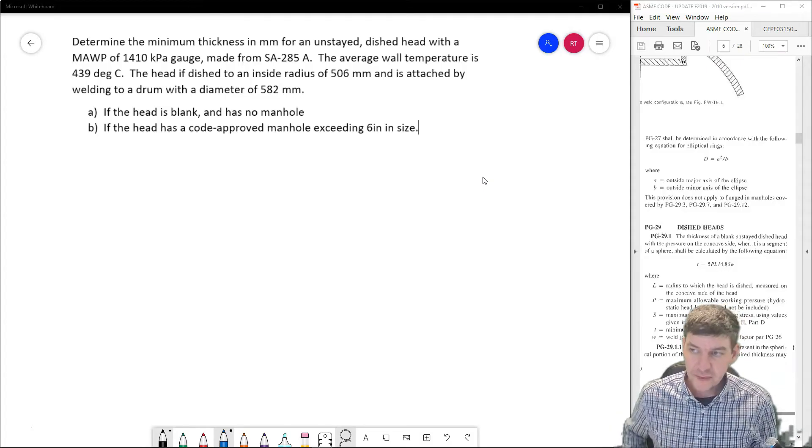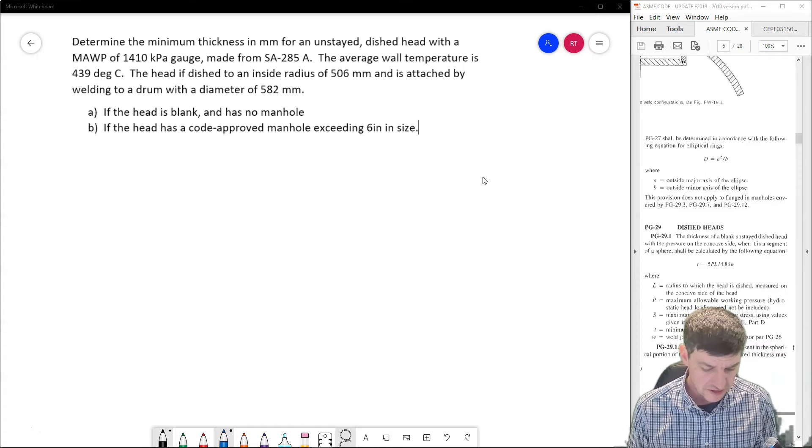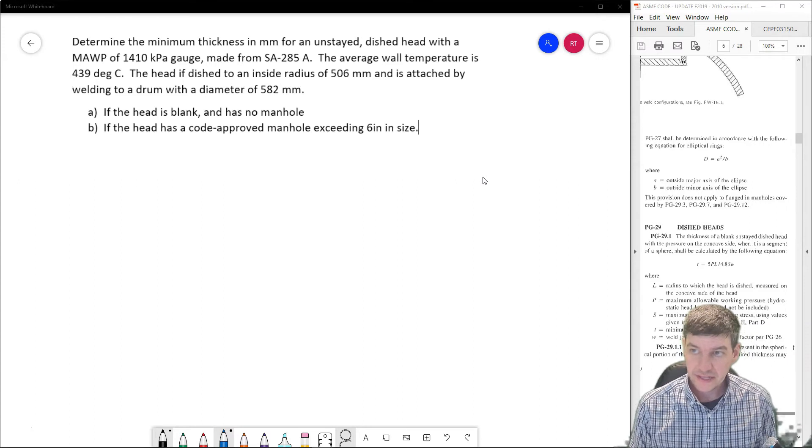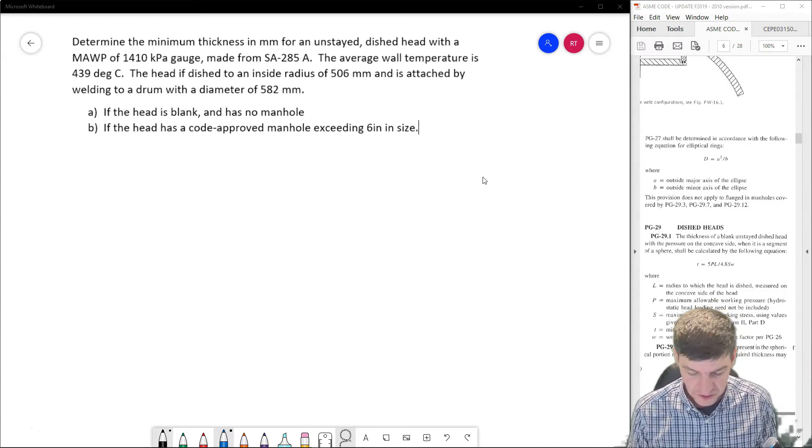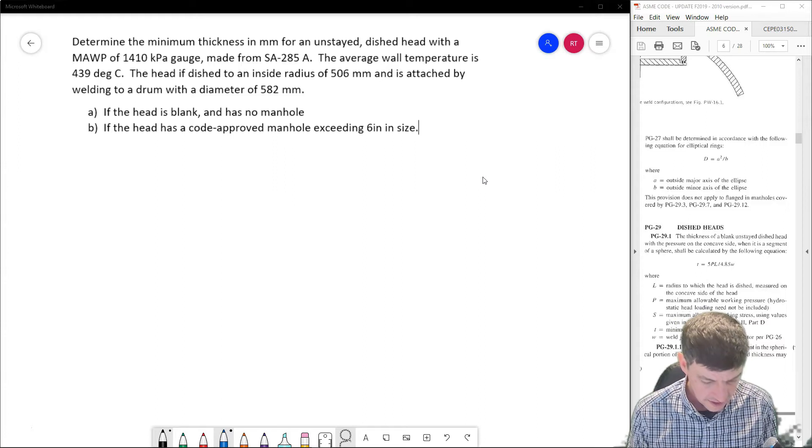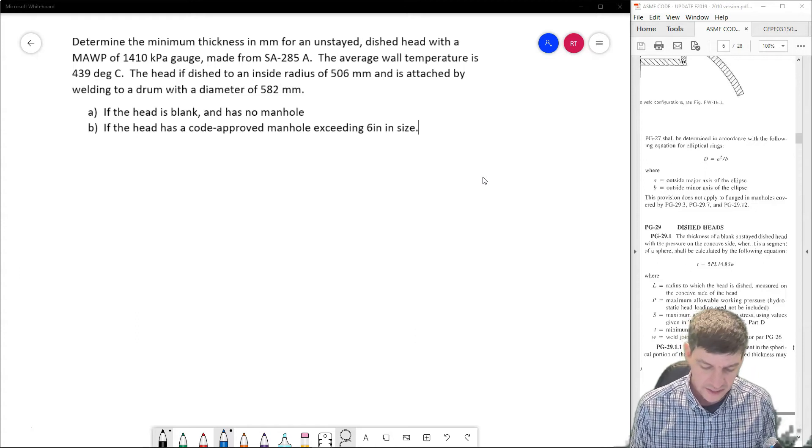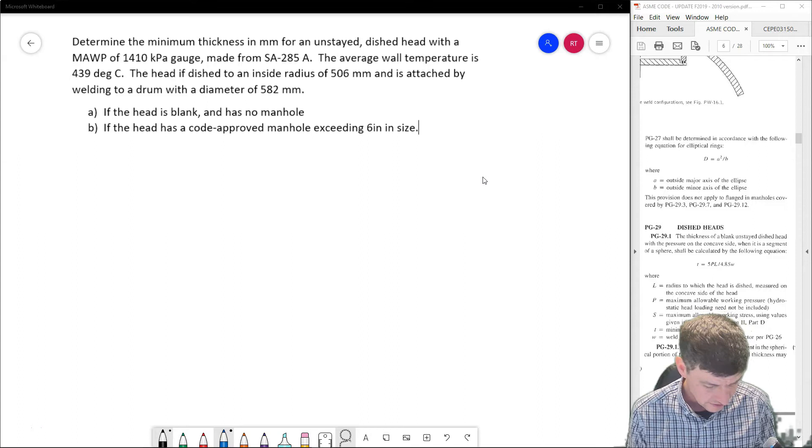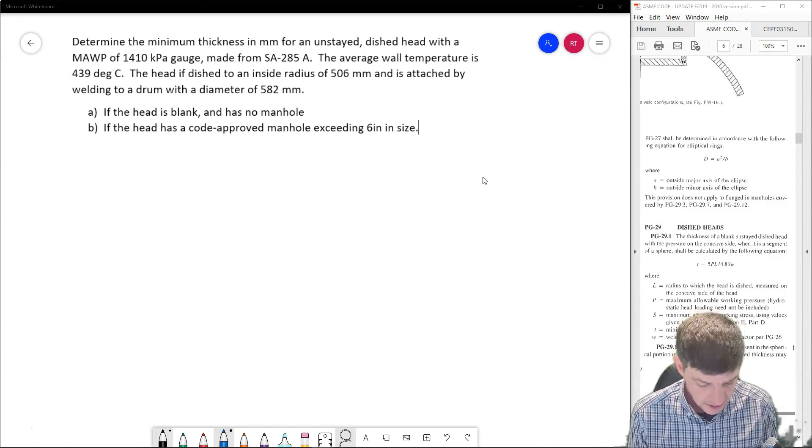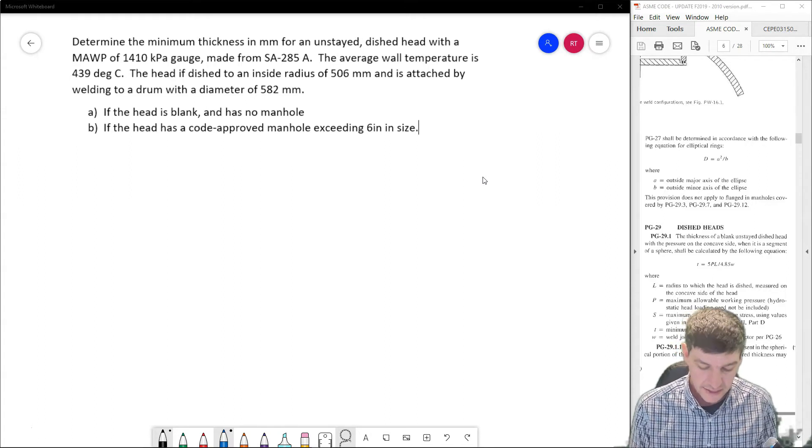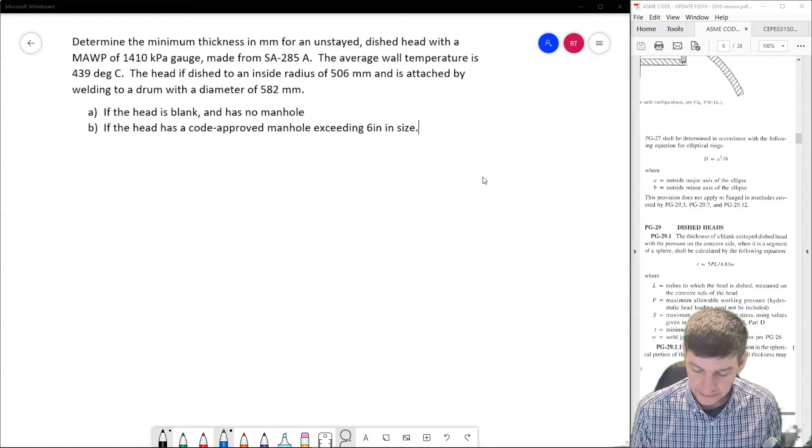Okay, so I have my question here: determine the minimum thickness in millimeters for an unstayed dished head with a MAWP of 1410 kPa gauge, made from SA285A, and the average wall temperature 439 degrees Celsius. The head is dished to an inside radius of 506 millimeters and is attached by welding to a drum with a diameter of 582 millimeters. If the head is blank and has no manhole, that's the first case we want to calculate for.